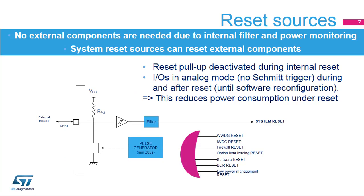Here is the simplified block diagram of the system reset. All internal reset sources provide a reset signal on the NRST pin, which can be used to reset other components of the application board. No external reset circuitry is needed due to the internal glitch filter and the safe power monitoring feature, which guarantees the reset of the application when VDD is below the selected threshold. The internal pull-up on the NRST pin, which maintains a high level when no reset signal is driven low, is deactivated when an internal reset is driven in order to reduce power consumption under reset.